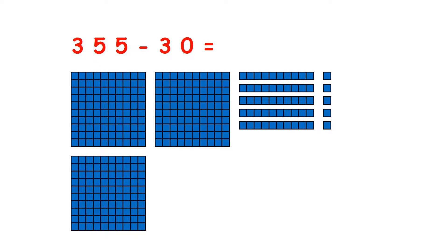We can subtract a multiple of 10 from a three-digit number mentally without needing a number line. So we have 355 and we're subtracting 30, which means we have five tens and we're subtracting three tens.